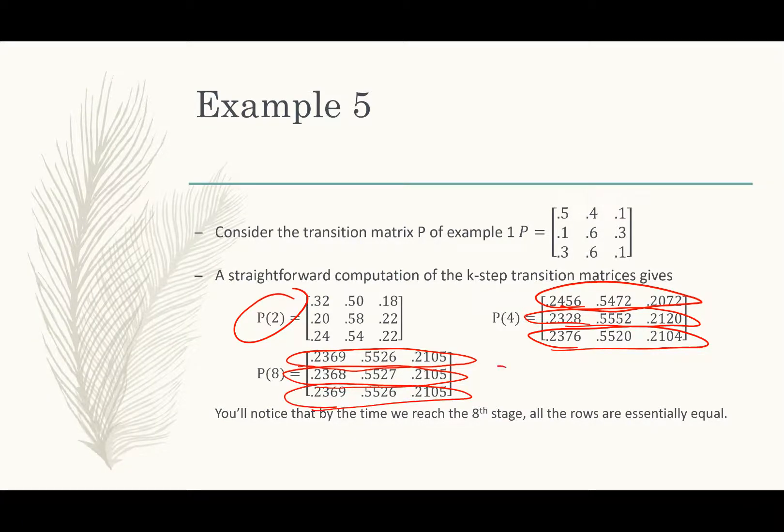And these rows are, once they're all the same, that is what's known as the stable vector. And so if all we have to do is go further and further out in terms of the higher transitions, the higher the exponent we use, then we'll come across that stable vector.